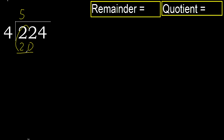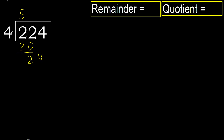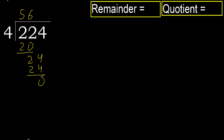Subtract, next. 4 multiplied by 6 is 24. 24 is not greater, ok. Subtract 0. Next — that is not a number, therefore finish it.